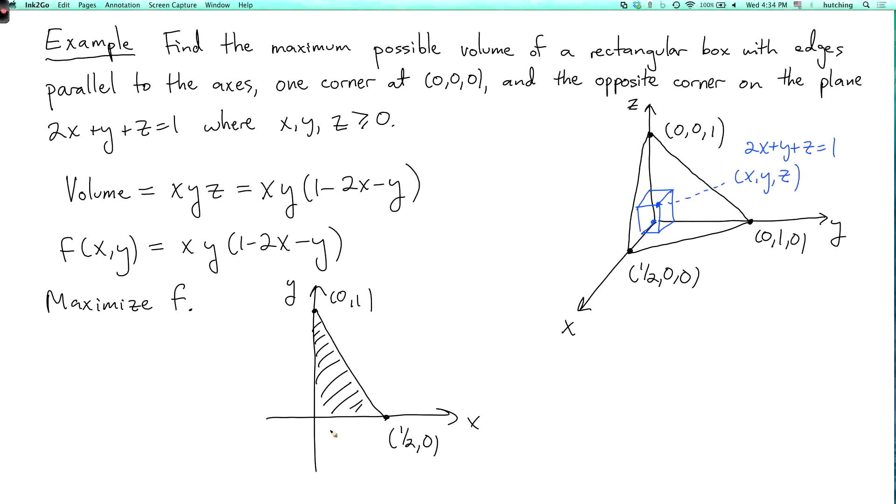So it's bounded by the line y equals 0, the line x equals 0, and this is the line 2x plus y equals 1. You'll notice that these three boundary edges are exactly where f is equal to zero. They're one of the factors of f equals zero. So this is our domain. And we have that f equals zero on every point in the boundary of the domain.